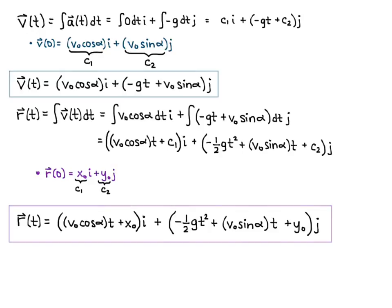That is the position vector any time an object is launched from initial position (x₀, y₀) with initial speed v₀ at angle α to the horizontal, with only gravity acting. This formula is on your formula sheet, so from now on you can plug numbers directly into it — you won't need to re-derive it every time now that we've derived it together.